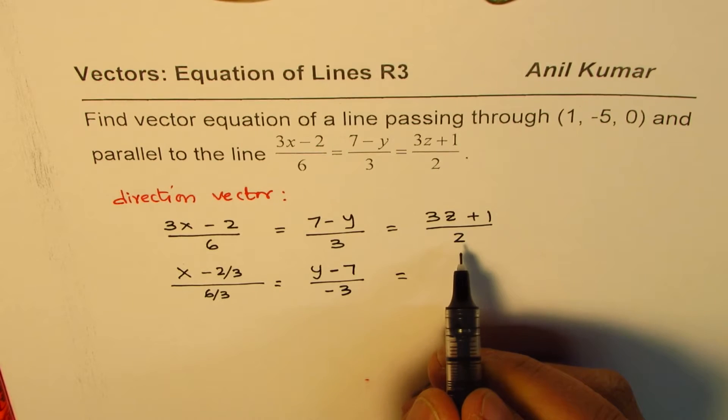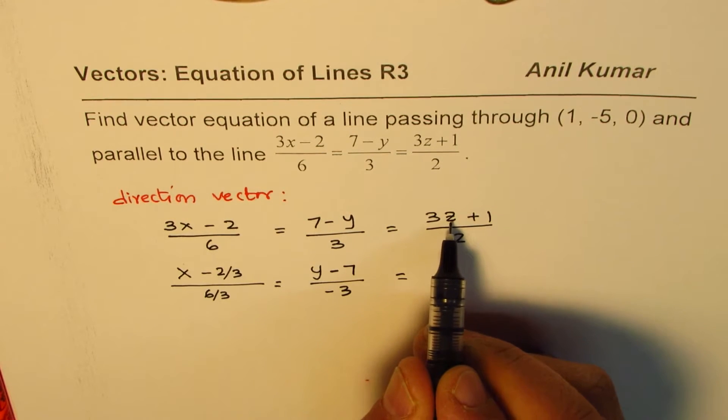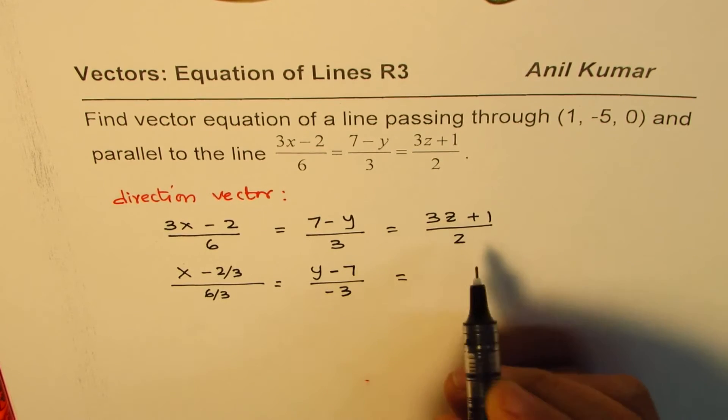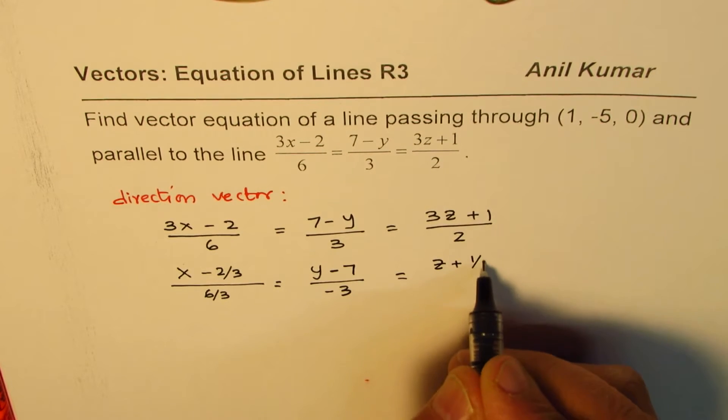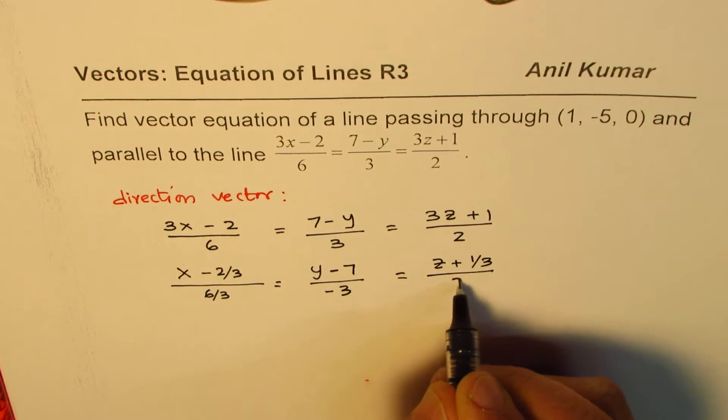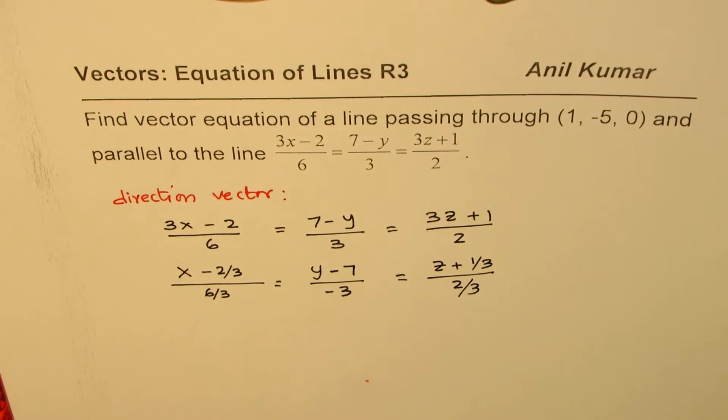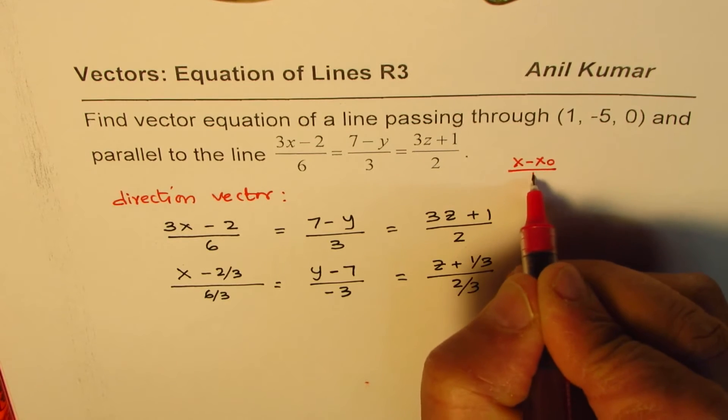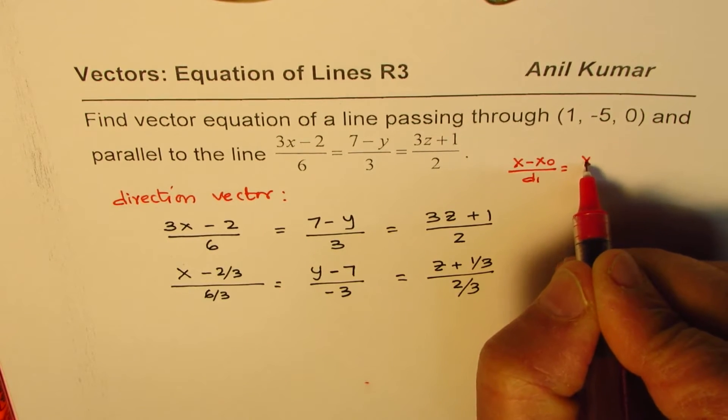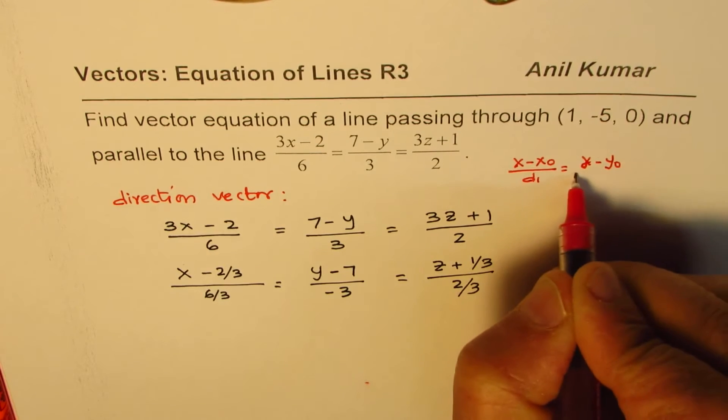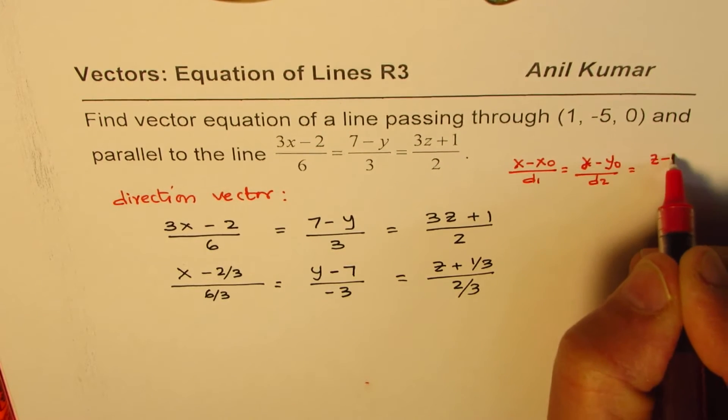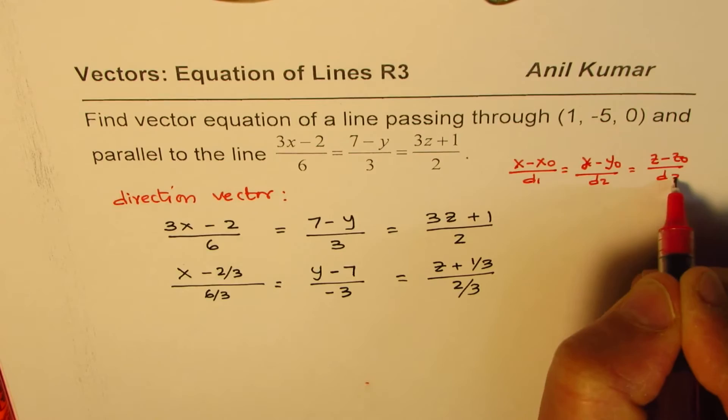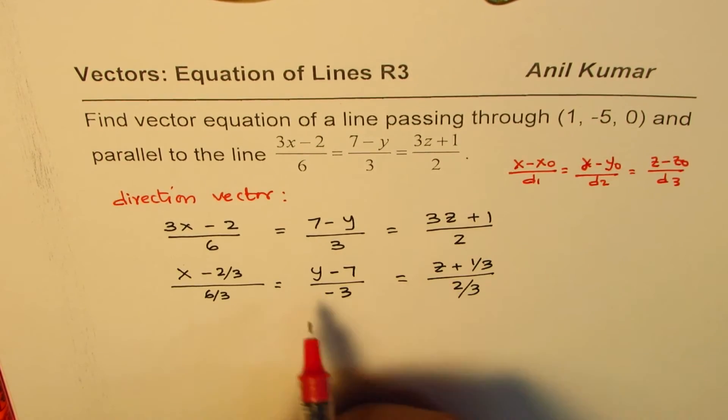And here, what should we do? We should divide by 3 since we want the coefficient of z to be 1. So we can write this as (z + 1/3)/(2/3). I hope you understand and appreciate this step. Now, the idea is we have to write our equation in the form (x - x0)/d1 = (y - y0)/d2 = (z - z0)/d3. So that is the format. So we got that format.